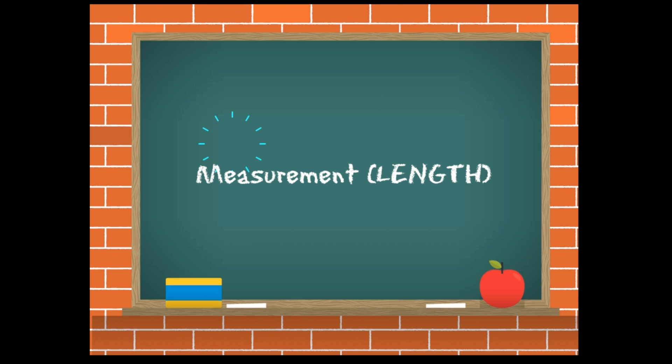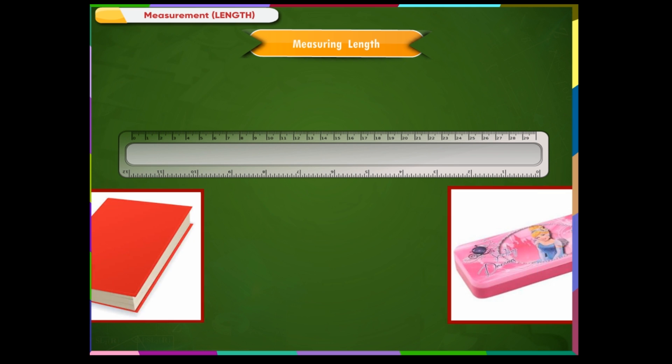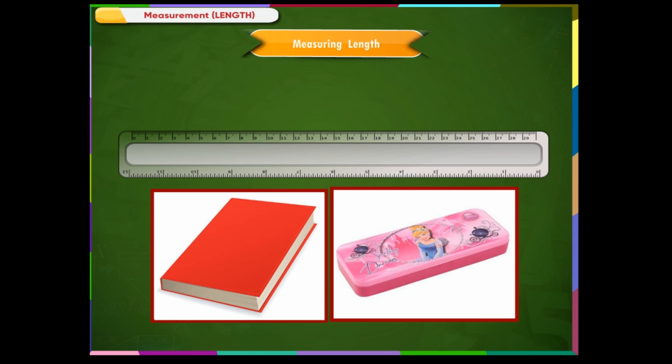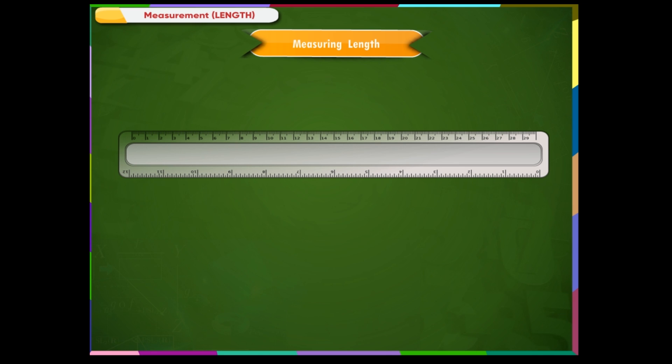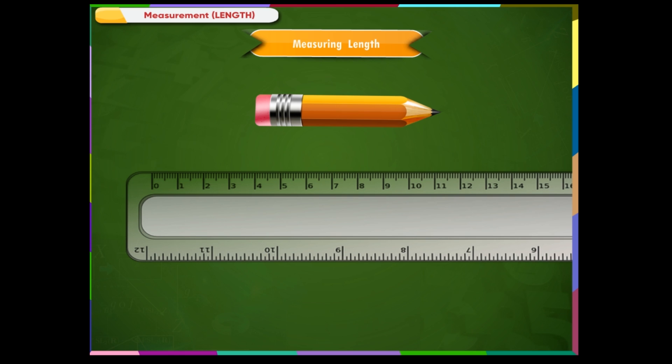Measurement. A standard ruler is one of the instruments for measuring lengths of small objects, like the length of a book or a pencil box. Let us see how to measure the length of a pencil with the ruler.